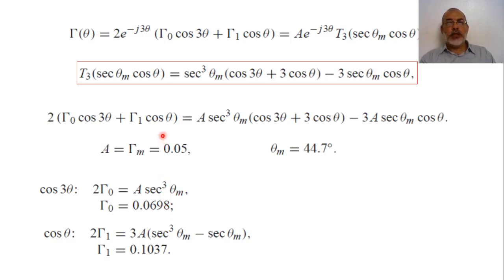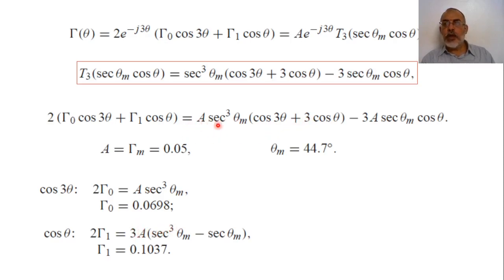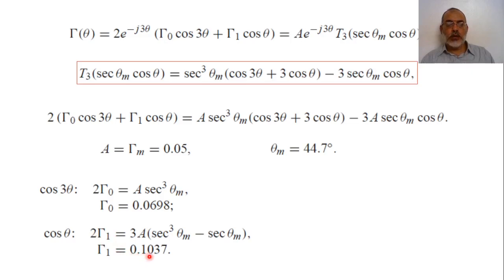By equating the cosine θ term: 2γ_1 = A·sec³(θ_max)·3 − 3A·sec(θ_max). Replacing A = 0.05 and θ_max = 44.7 degrees, we calculate γ_1 = 0.1037.